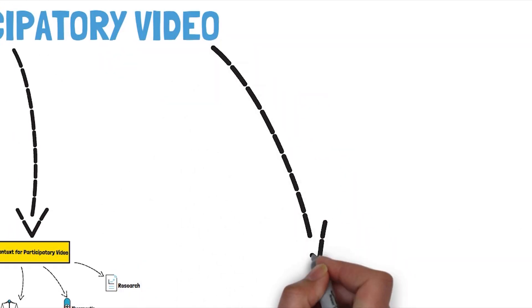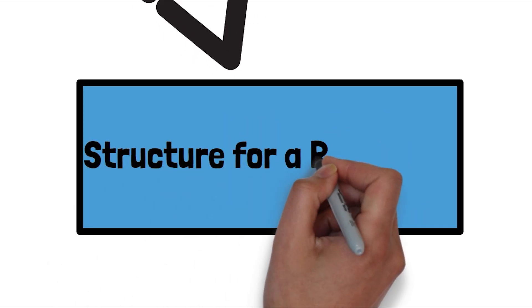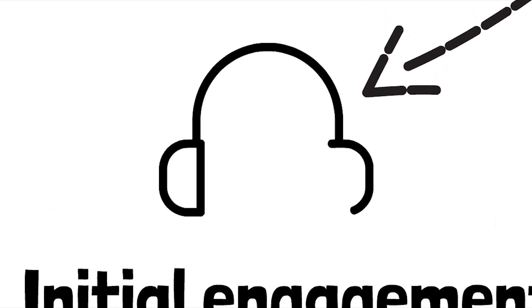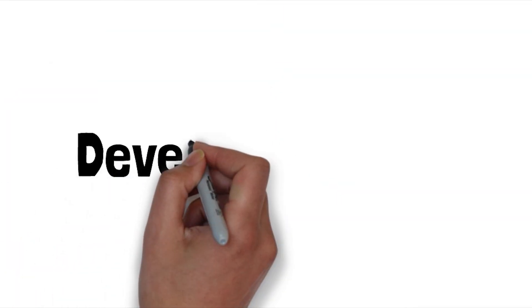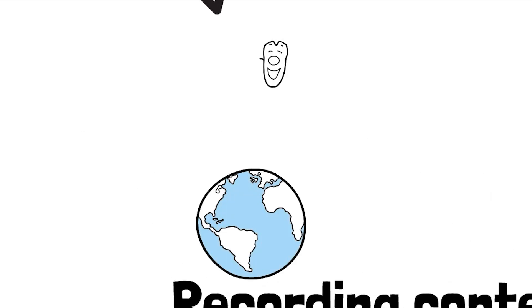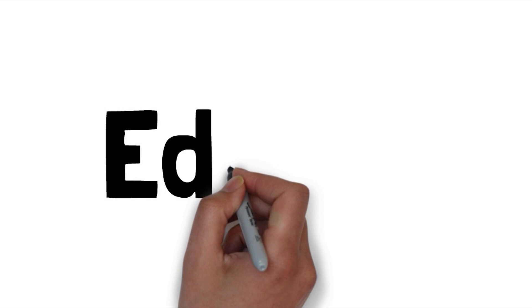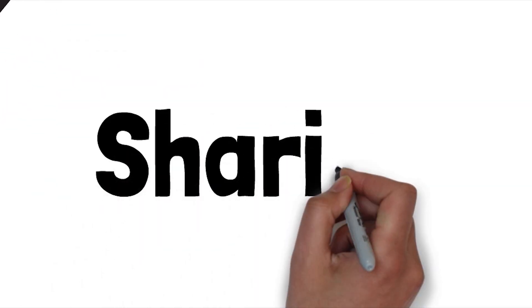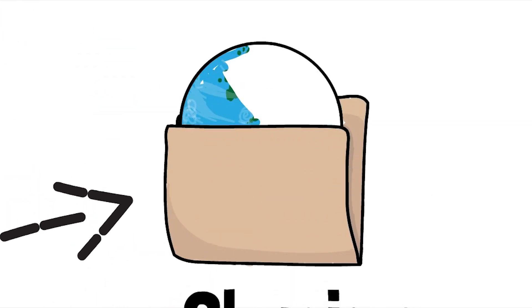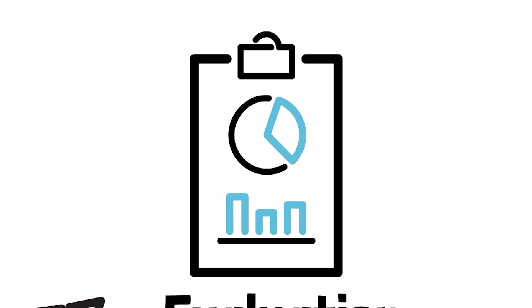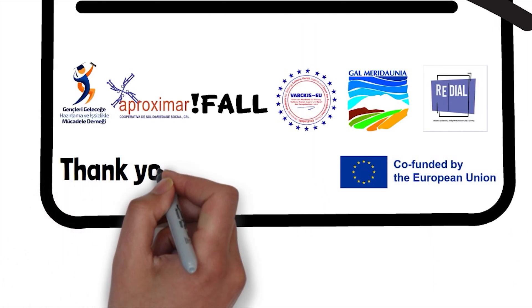As we embark on our participatory video projects, we will follow these six essential stages: initial engagement, developing ideas, recording content, editing, sharing, and evaluation.